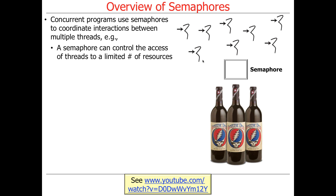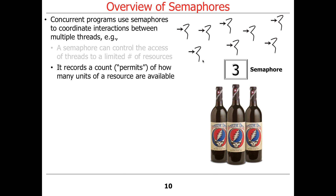I'm not advocating underage drinking by this example — I'm just trying to find a way to use the Grateful Dead, and I found a cool picture of Grateful Dead wine. We're going to use the semaphore to control access of threads — think of those as people who wanted to have drinks — to a limited number of resources. In this case, we've got a limited number of wine bottles. We're going to start out with a count, which is the number of permits, of how many units of a resource are available.